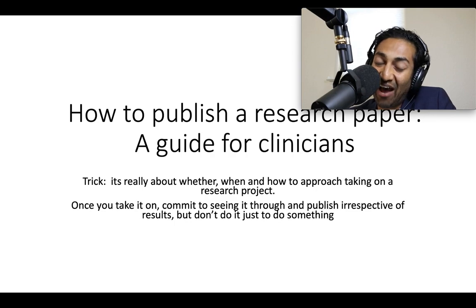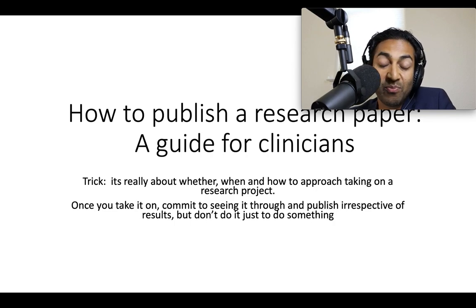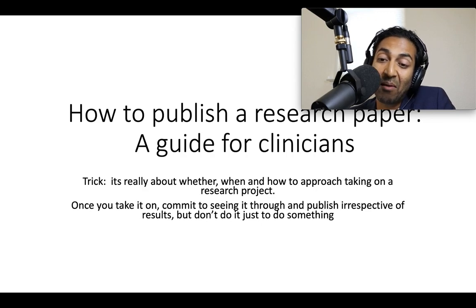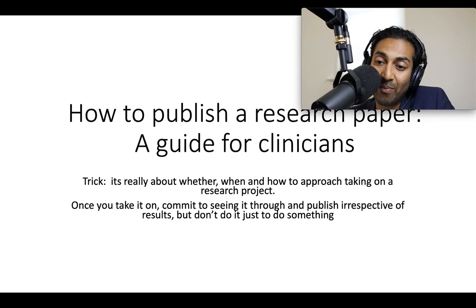This talk is a bit deceptive — it's entitled How to Publish a Research Paper: a Guide for Clinicians. But it's really something more. It's about whether, when, and how to approach taking on a research project in the first place. Once you commit to a research project, particularly as a senior or leading investigator, you've got to commit to seeing it through and publishing it irrespective of the results. But you should be very careful about what you select to do, and you should never do something just to buff your CV. Every paper you put out should contribute to some broader discussion or piece of scholarship. As writer Jeffrey Eugenides said, if he published everything he'd ever written, he'd have written a lot more books — but his reputation as a writer would be diminished. That's true in science too. Your reputation as a scientist is in part based on the quality, caliber, and importance of what you publish — so be selective and don't waste your time on projects unlikely to amount to a hill of beans.